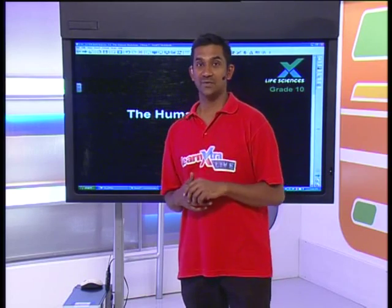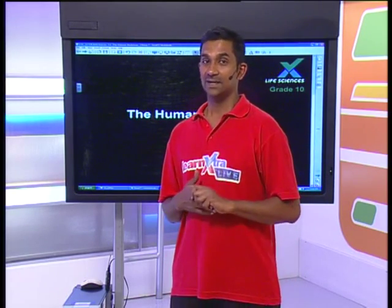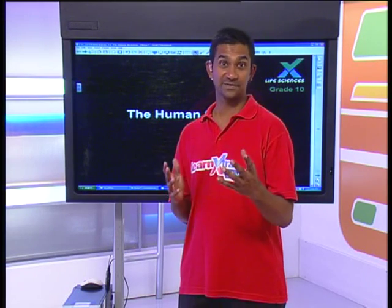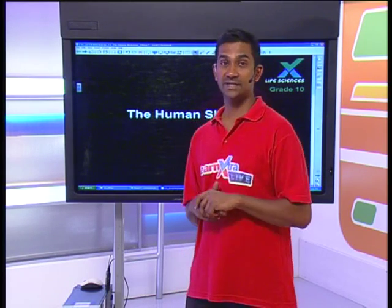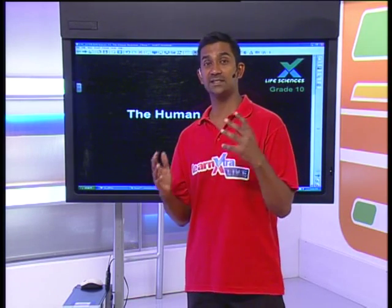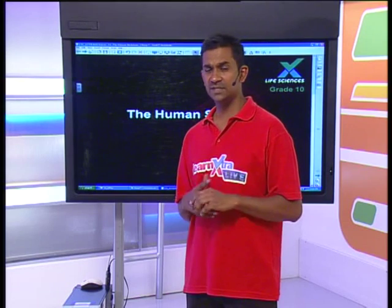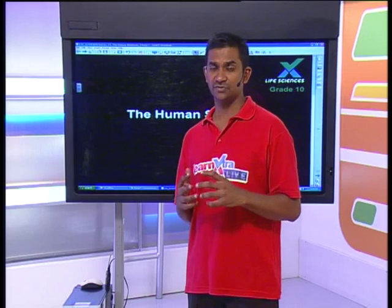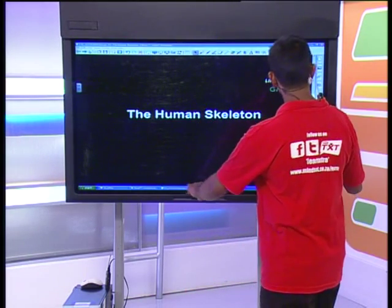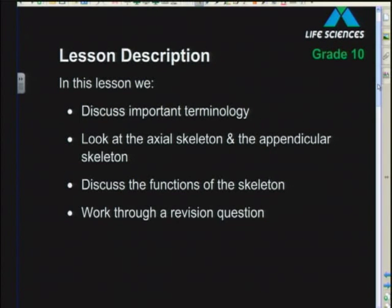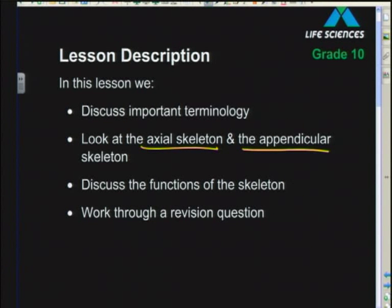Welcome again to Wednesday's edition of Life Sciences. Let's look at what we've done in the last week. Last week we looked at different types of skeletons — endoskeletons, exoskeletons, and hydrostatic skeletons. Today we're going to look at the human skeleton: its structure, different parts, and functions, and we'll work through some revision questions towards the end.